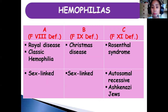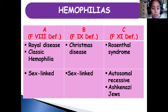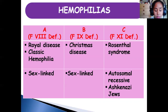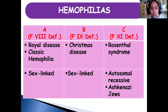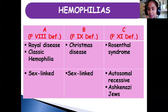Hemophilia B is factor 9 deficiency, also called Christmas disease. The mildest or most silent form is hemophilia C or Rosenthal syndrome, which is factor 11 deficiency. Hemophilia A and B are both X-linked, while hemophilia C is autosomal recessive and is found among Ashkenazi Jews due to intermarriage within the family.